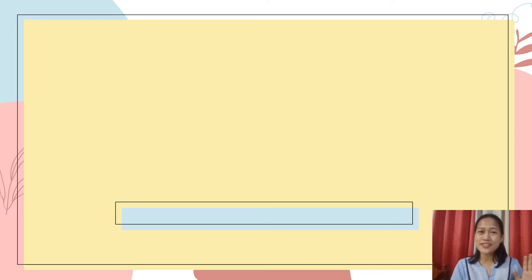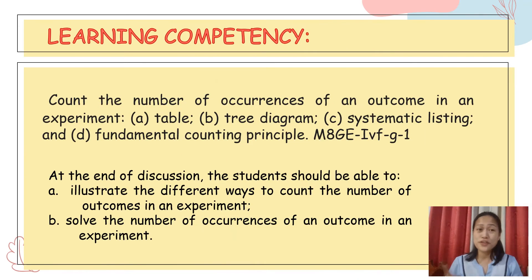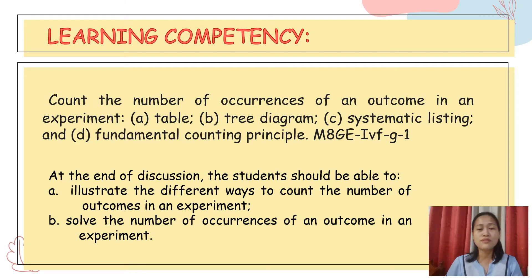Hello, grade 8 learners! Welcome to our online mathematics class. For your learning competency, count the number of occurrences of an outcome in an experiment using table, tree diagram, systematic listing, and fundamental counting principle. At the end of our discussion, you should be able to illustrate the different ways to count the number of outcomes in an experiment and solve the number of occurrences of an outcome in an experiment.